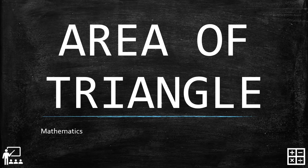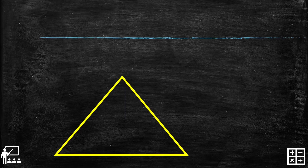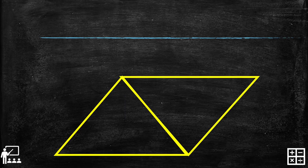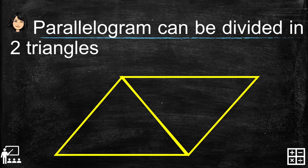This video lesson is about the area of a triangle. Before we proceed, let me show you something. I have here two triangles — a first triangle and a second triangle. What have you observed? When combined, they form a parallelogram. So it tells us that a parallelogram can be divided into two triangles.